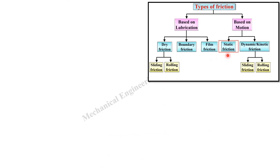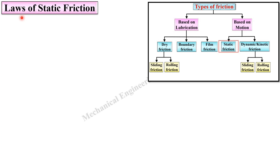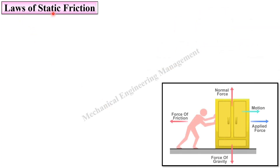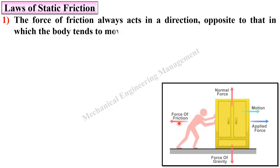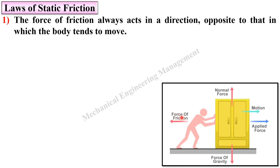Let us see one by one. First: laws of static friction. In the past video, we have discussed about static friction — when the body is at rest, there is static friction. The force of friction always acts in a direction opposite to that in which the body tends to move. So the force of friction is always opposite to the motion.